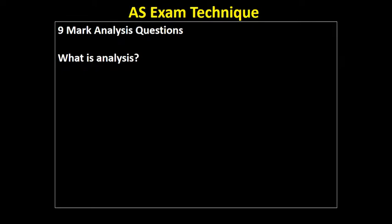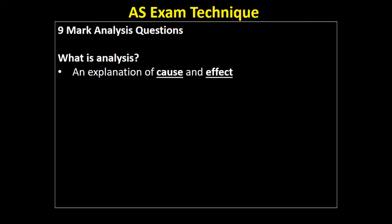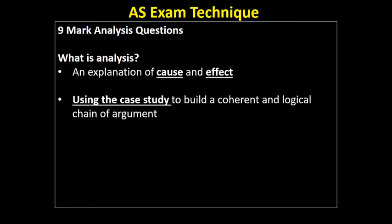The question then becomes: if I've got to write analytically, what is actually analysis? Analysis can be explained in any number of ways. It's an explanation of cause and effect — something happens, something changes, and the impact is X, Y, or Z. You've used analysis all the time; you probably call it different things in your different subjects. Essentially it's about identifying relationships between two or more different variables. You talk about it all the time — why is this Brad Pitt film going to be a box office success, or why are Chelsea going to win the Premier League this season? You can analyze that using cause and effect.